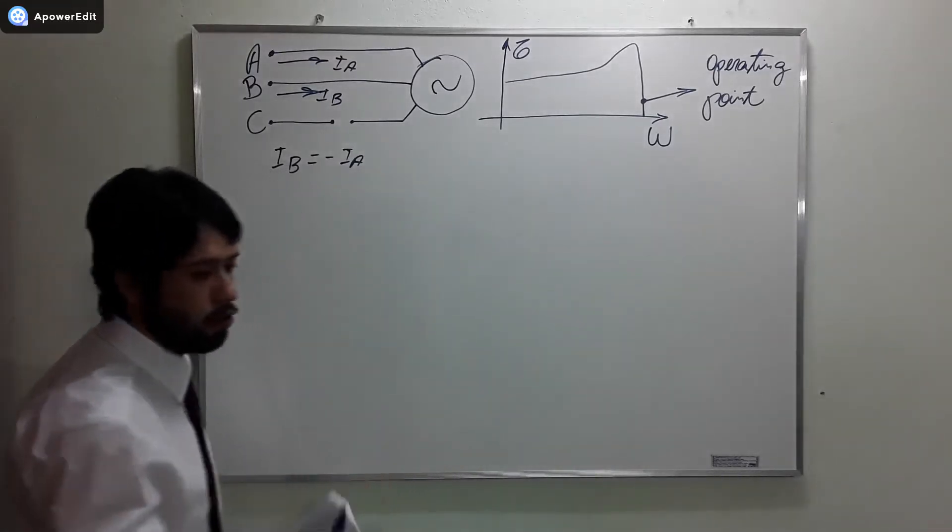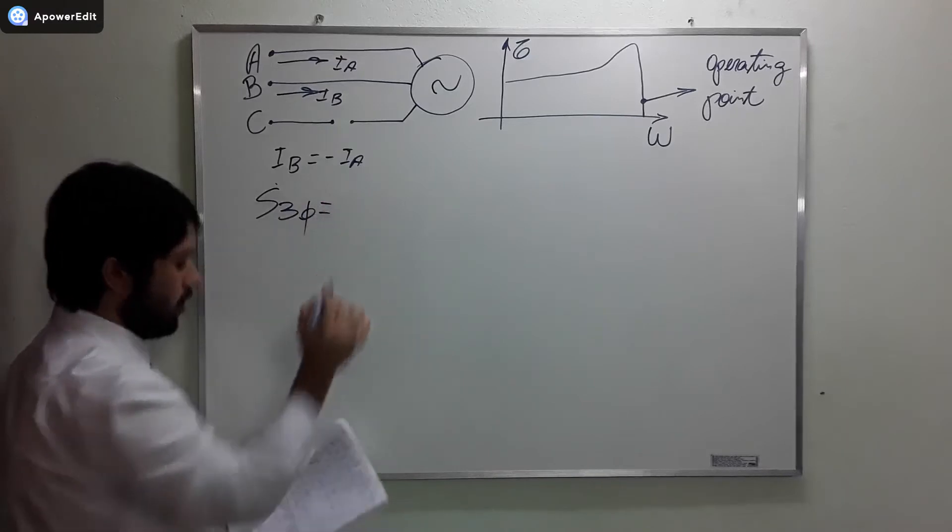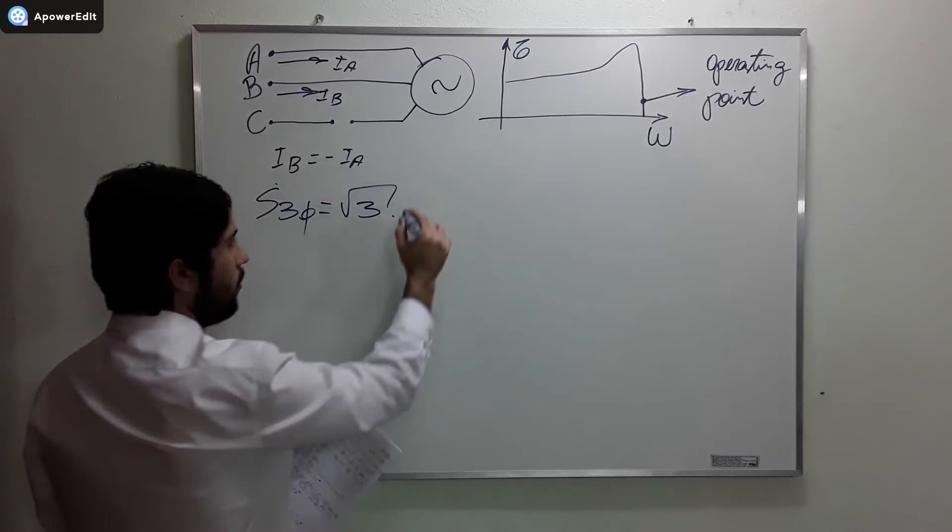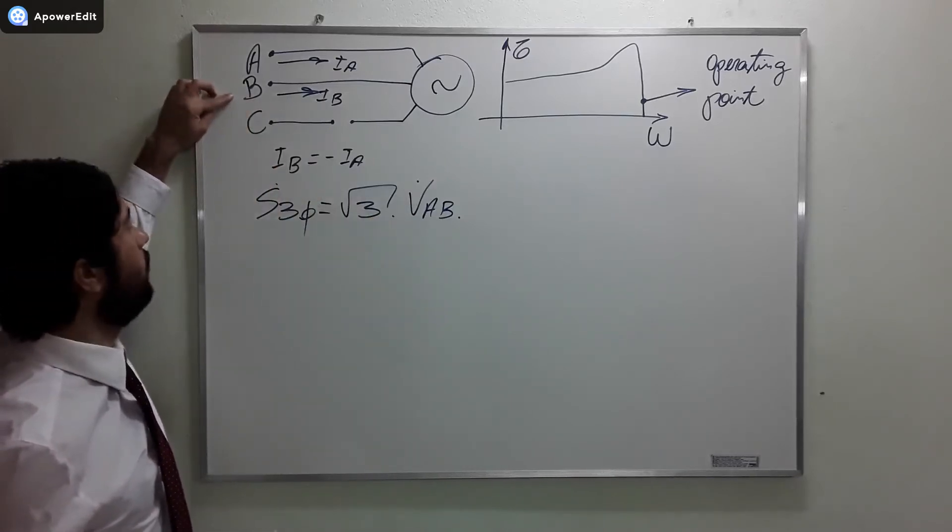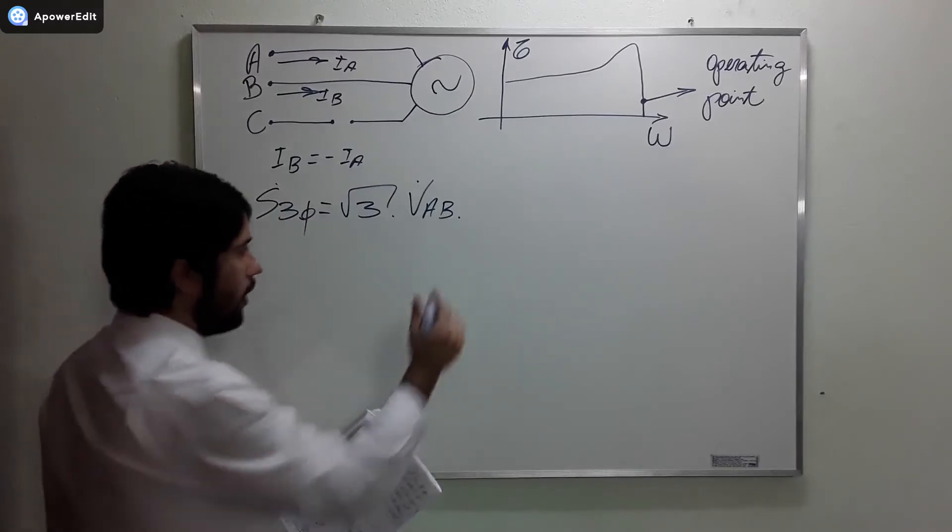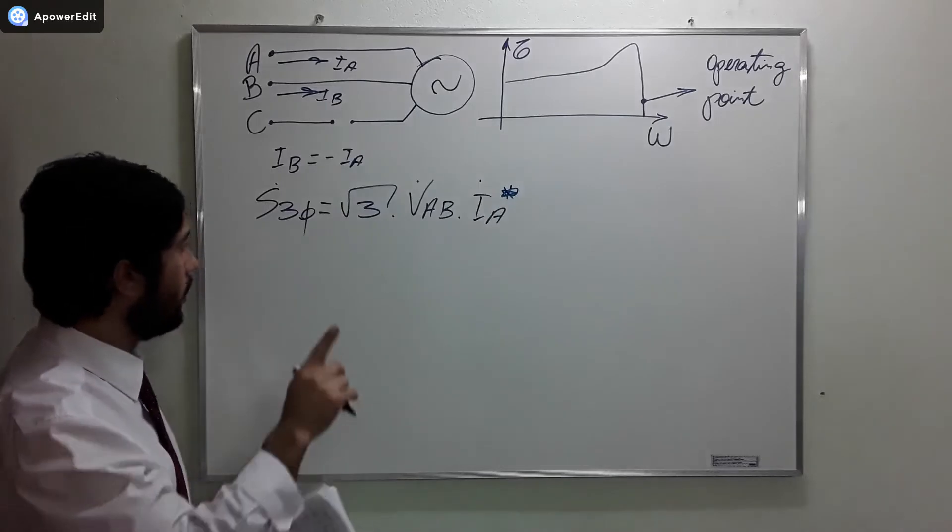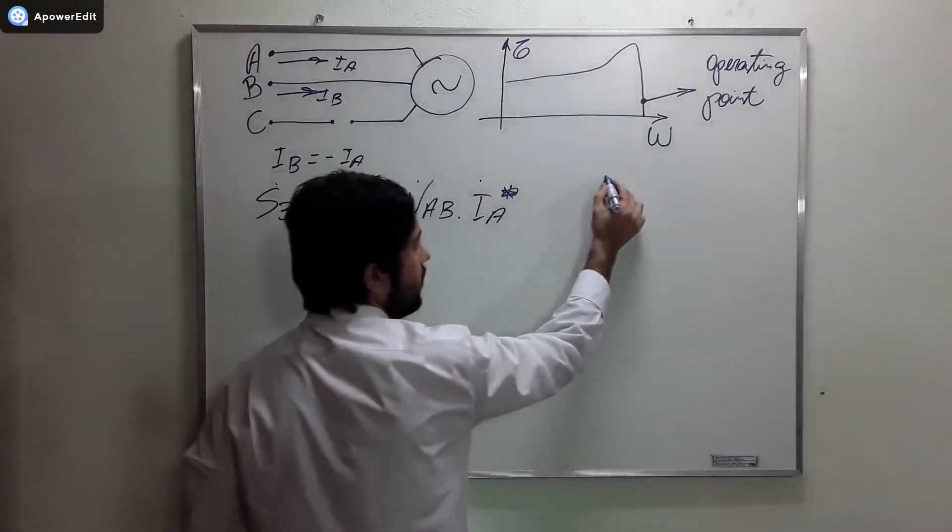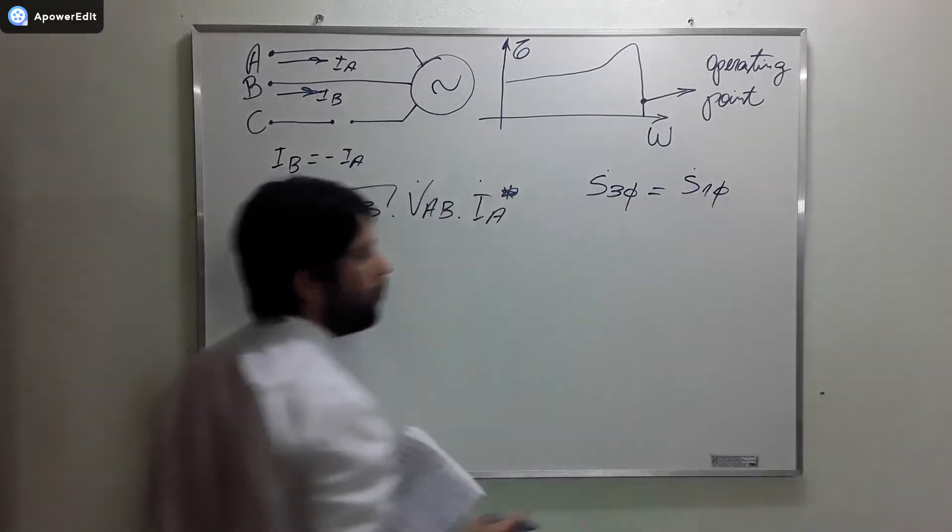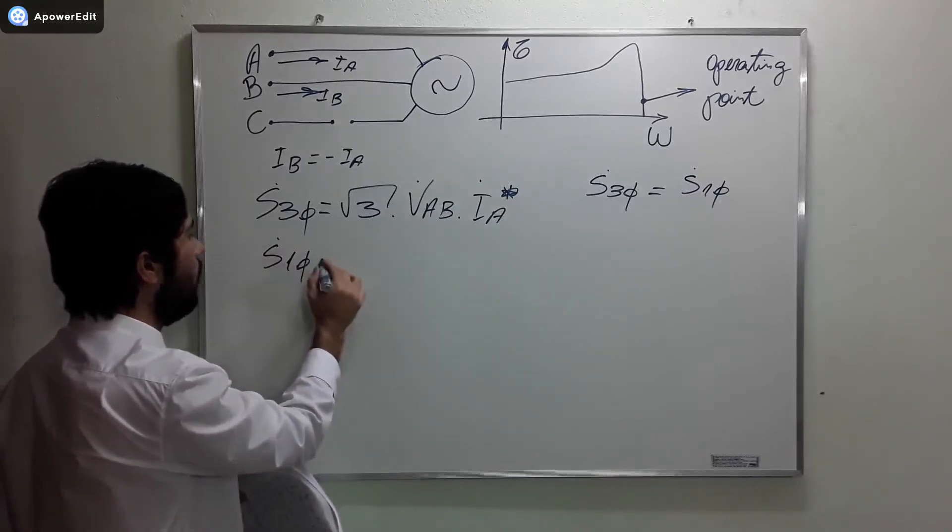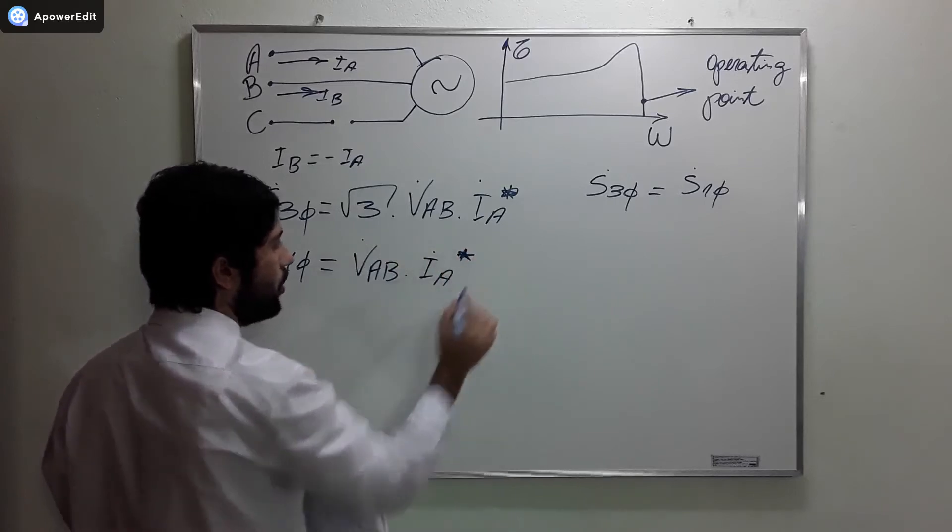So, before losing the phase, when the motor is still a three-phase motor, we have the power. The three-phase power is equal to the square root of three times the line voltage. Here, I chose VAB, but you could have chosen VBC, for example, just to illustrate, and IA conjugate. And we proved here, by analyzing the graph,